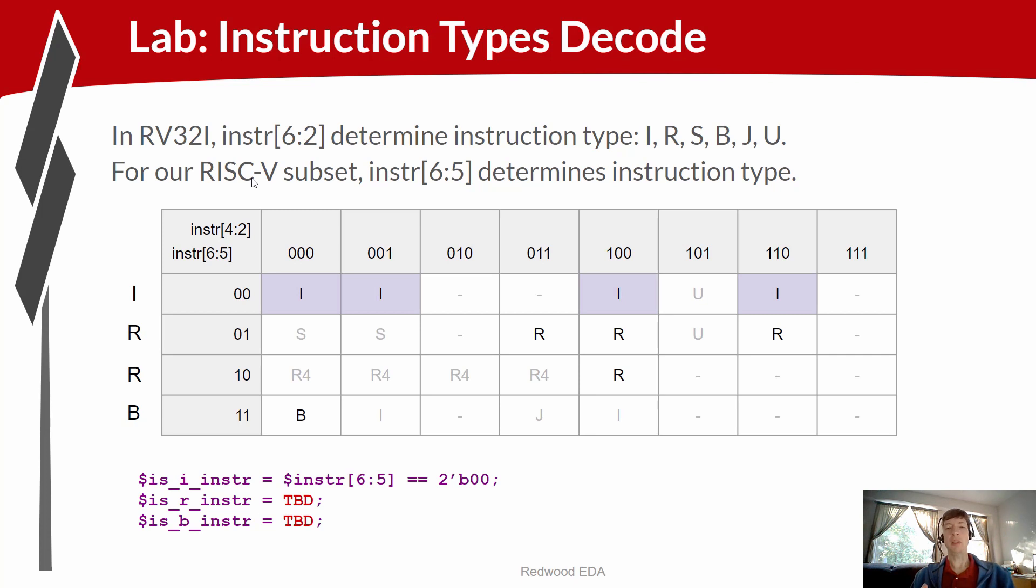And our program is written entirely with three instructions: an add instruction, an add immediate instruction, and a branch instruction. So those are the only three instructions that we really need to support in our instruction decode logic.